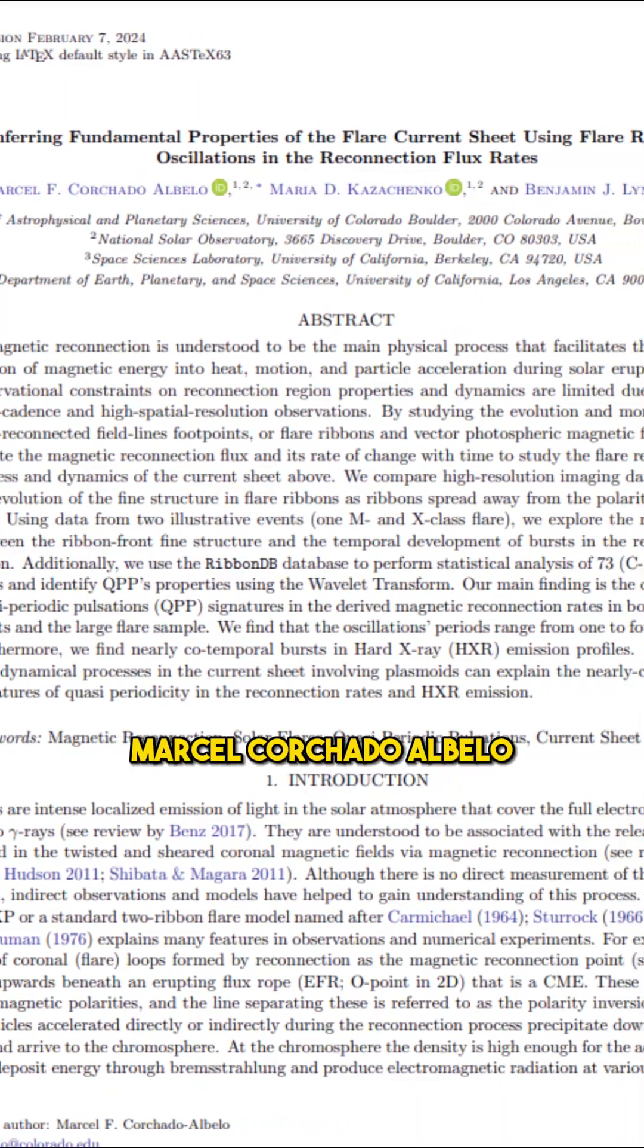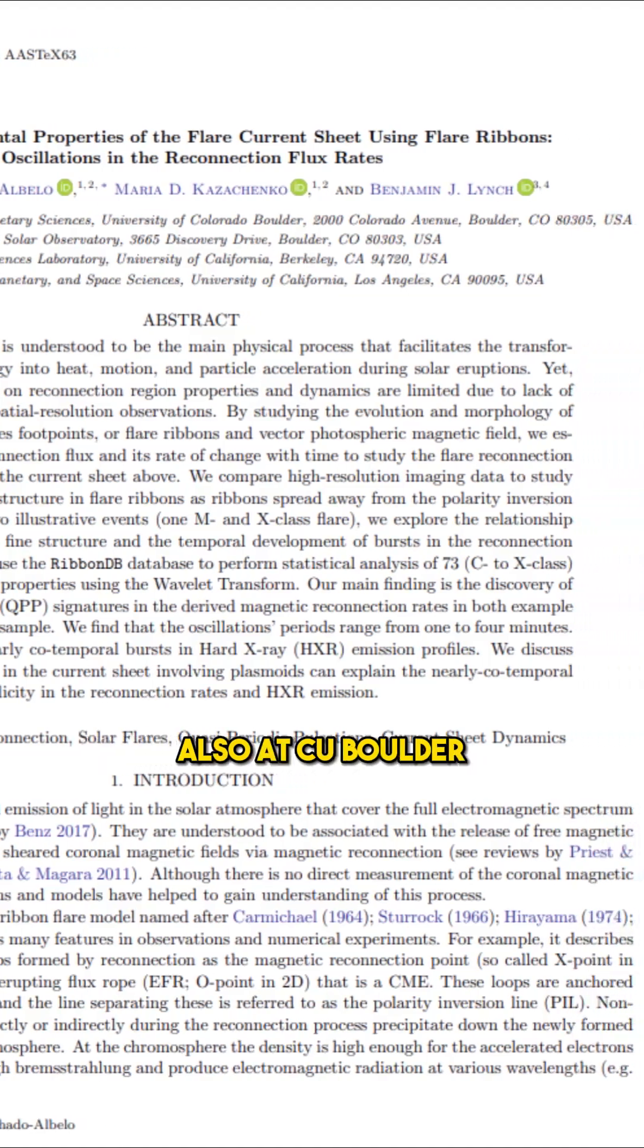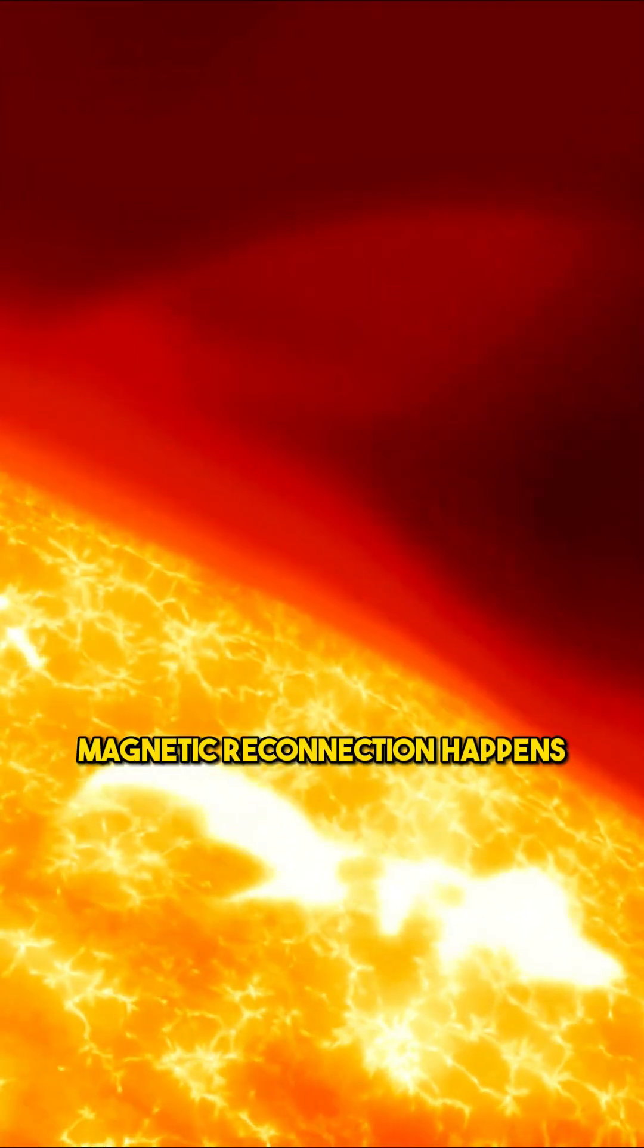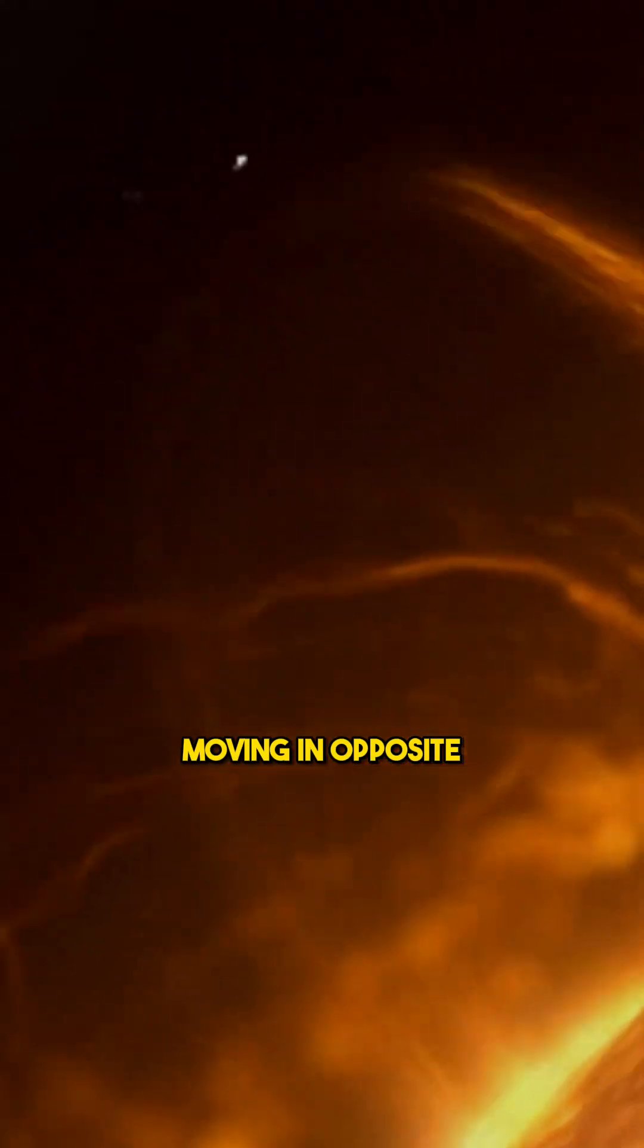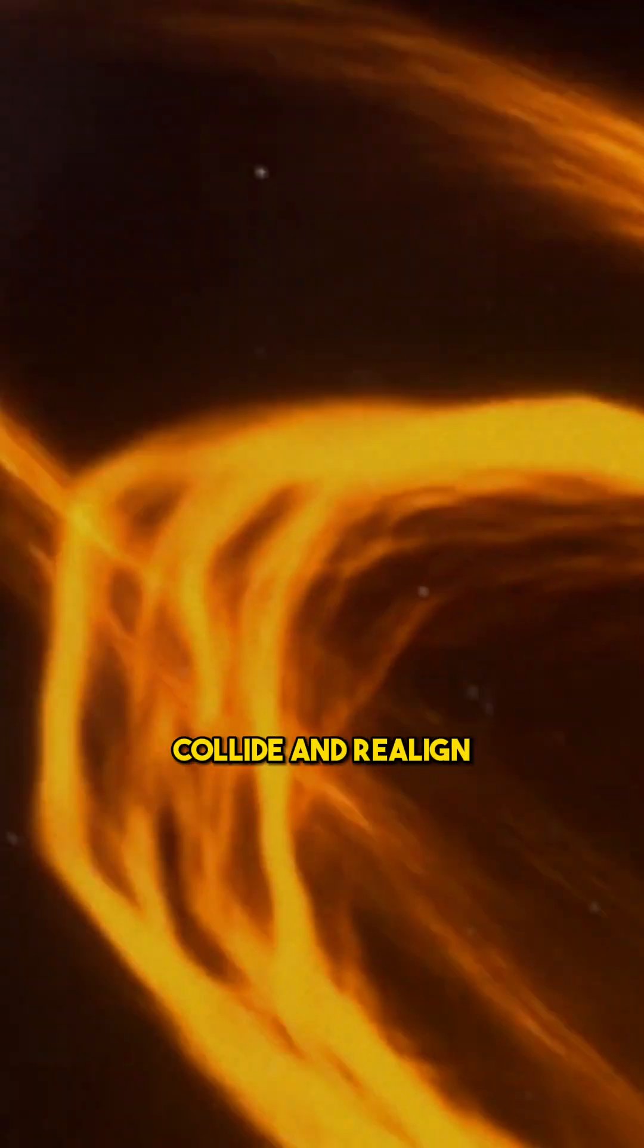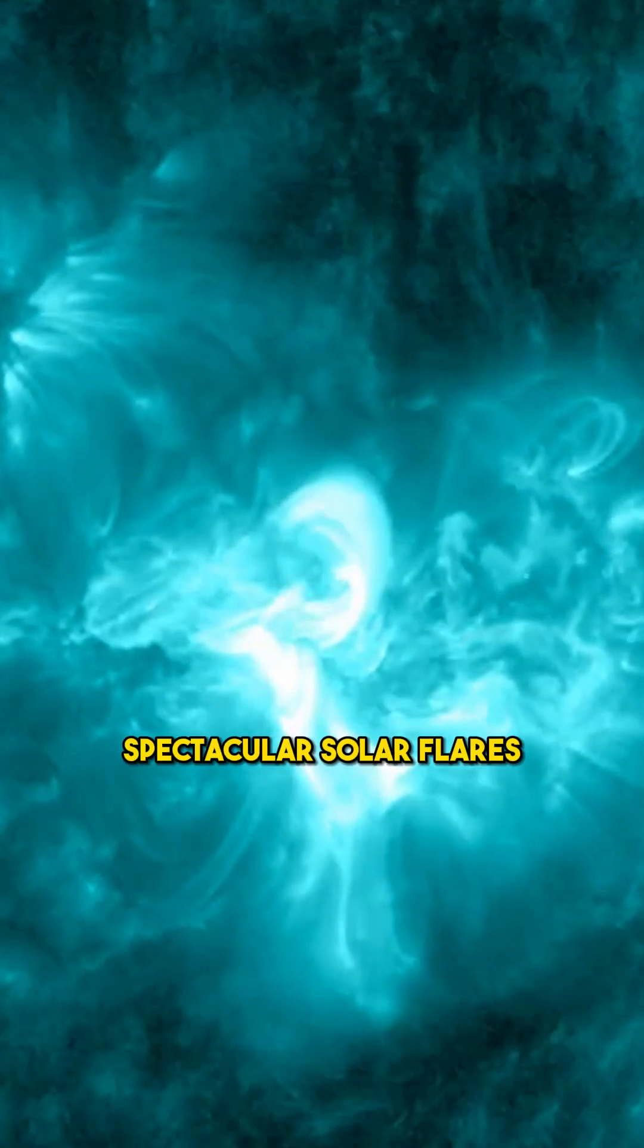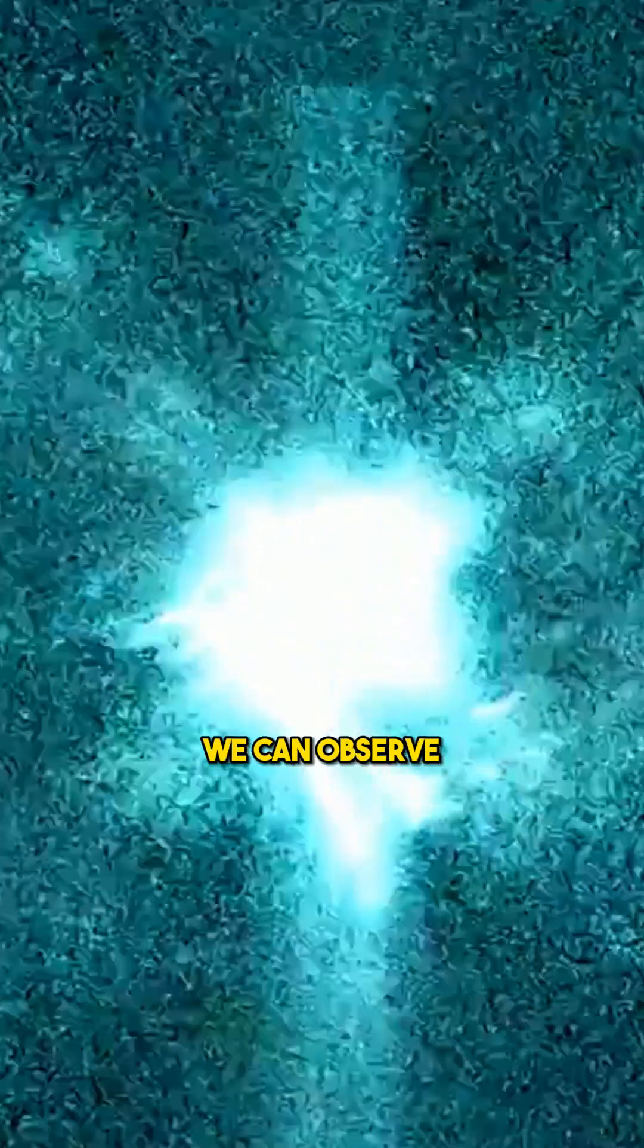In another study by Marcel Corchado Albello, also at CU Boulder, it's revealed that solar magnetic reconnection happens when the sun's magnetic field lines, moving in opposite directions, collide and realign. This intense interaction releases a massive burst of energy, resulting in the spectacular solar flares we can observe.